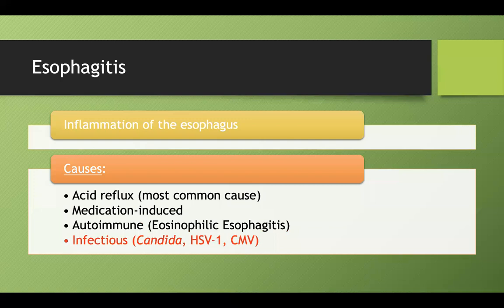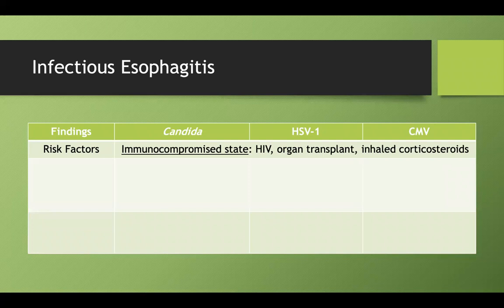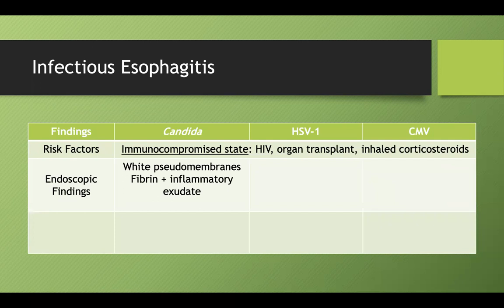The last types of esophagitis are the infectious causes: Candida, HSV1, and CMV. The risk factors are the same for all three — you really need to be immunocompromised to get an infection of the esophagus. That means HIV, organ transplant, or prolonged inhaled corticosteroid use. On endoscopy, Candida shows white pseudomembranes made of fibrin and inflammatory exudate — this has actually appeared on test questions described as fibrinous material with inflammatory exudate.